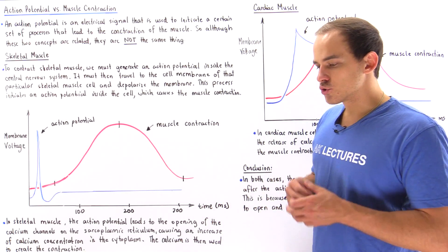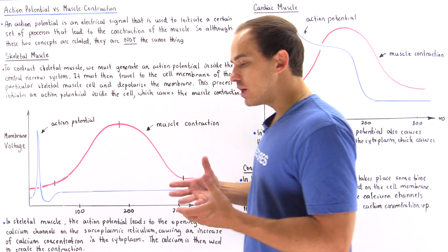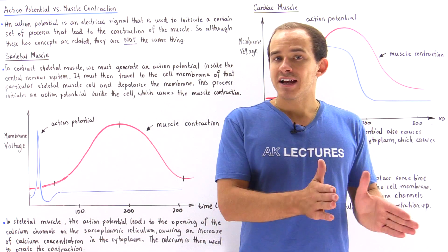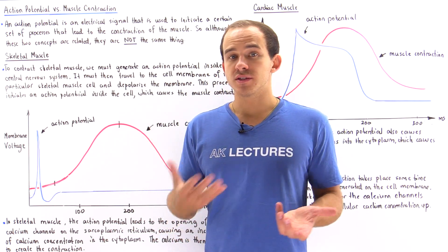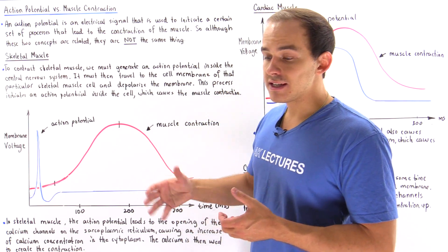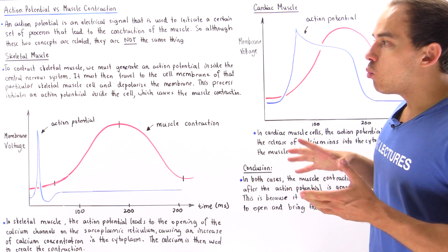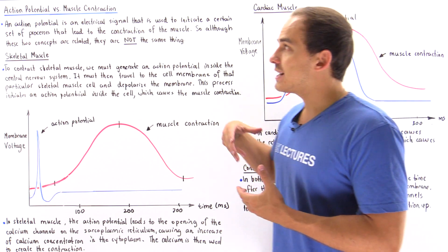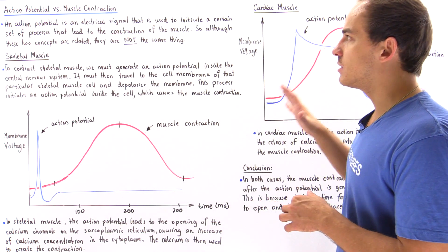In the previous several lectures, we discussed what an action potential is and we discussed what a muscle contraction is. We said that an action potential causes a muscle contraction. We also discussed the graph of an action potential that takes place in skeletal muscles and that takes place in cardiac muscles. What we're going to emphasize in this lecture is the fact that an action potential is not the same thing as a muscle contraction.